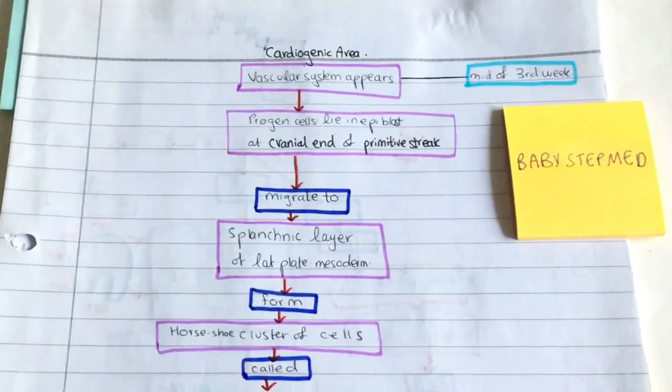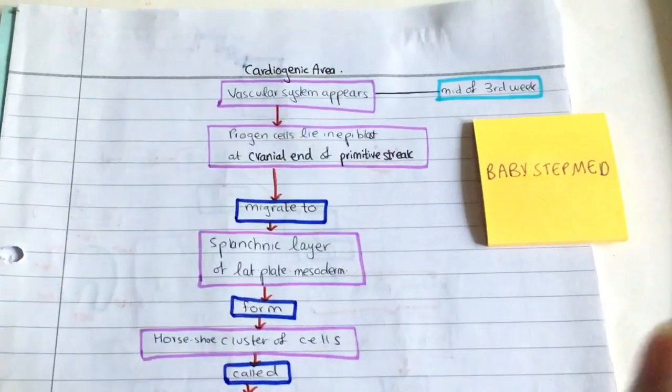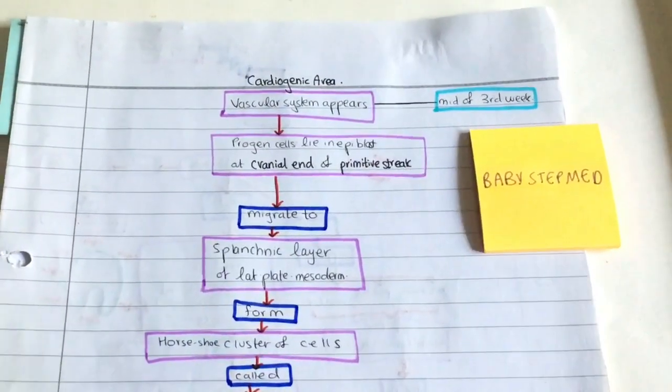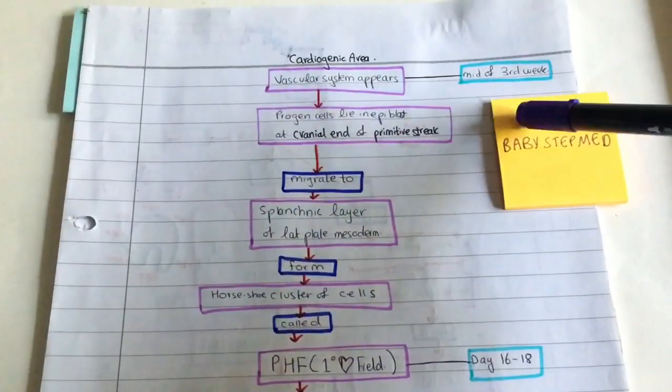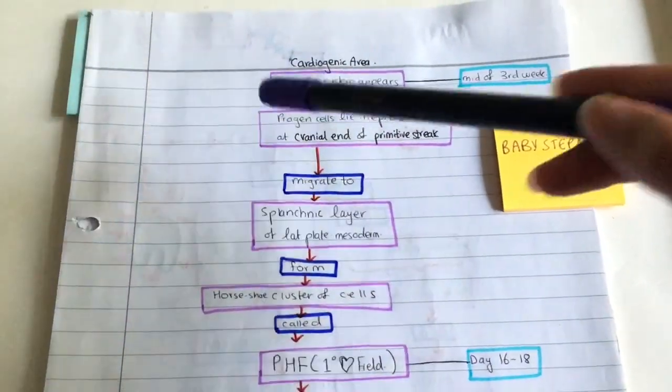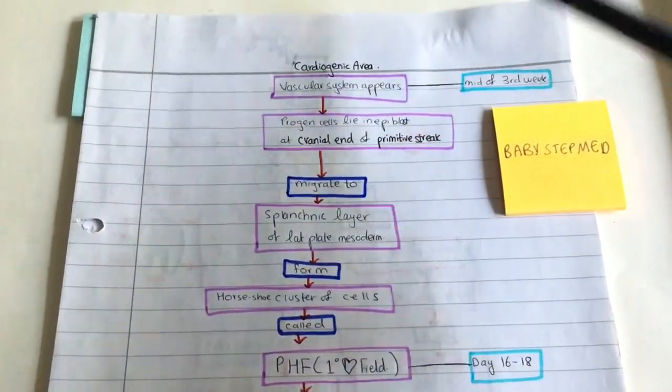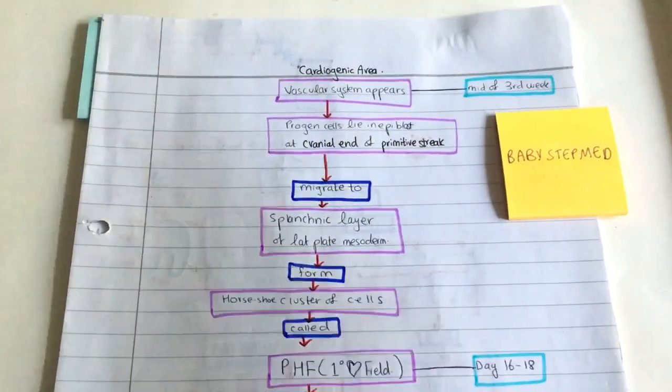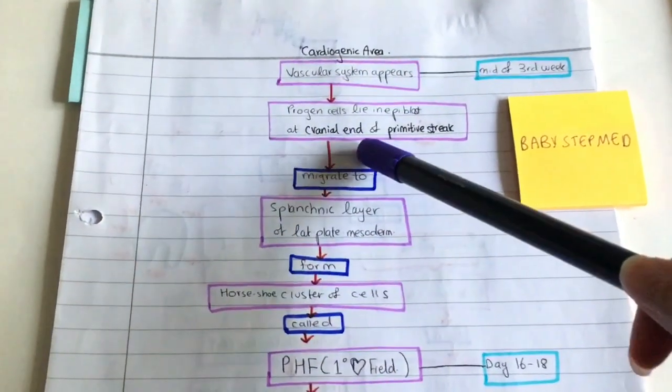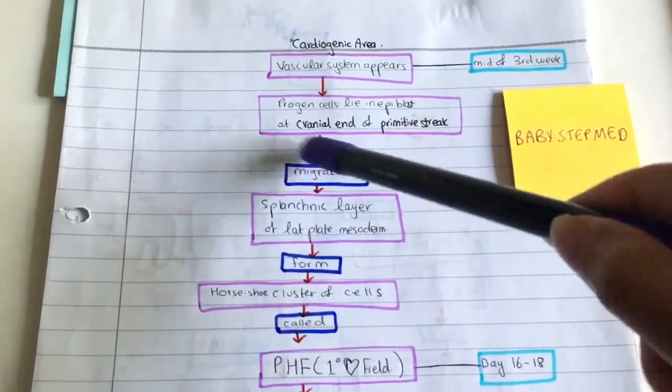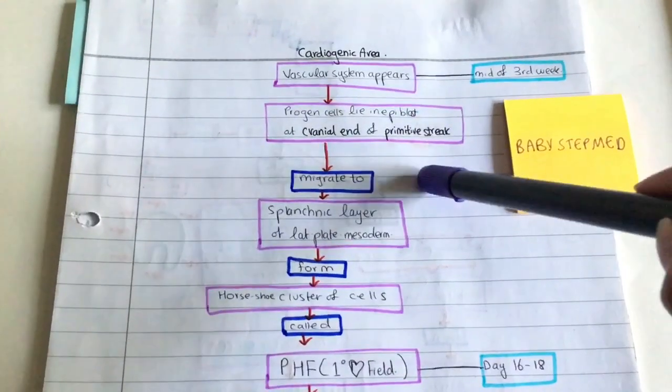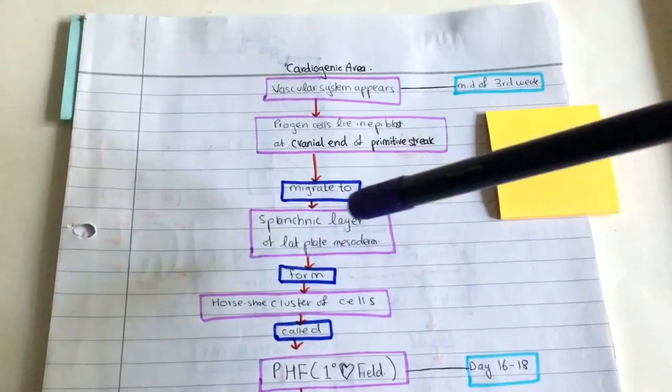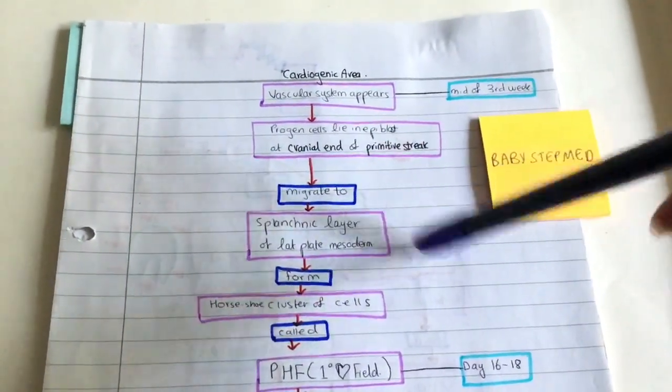We're going to start off with the cardiogenic area. How is the cardiogenic area formed? Basically, at the middle of the third week, the vascular system appears. You have progenitor cells - cells from which other types of cells are formed. They are in the epiblast at the cranial end of the primitive streak. These progenitor cells migrate to the splanchnic layer of the lateral plate mesoderm.